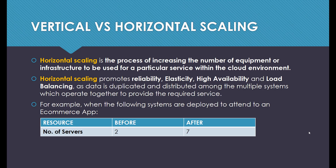For example, when the following systems are deployed to attend to an e-commerce app, you are increasing the number of the same servers from 2 to 7. You are increasing the number of the same kind of servers so that you have more servers attending to the same service required. This is what horizontal scaling is, and this is the difference between vertical and horizontal scaling.